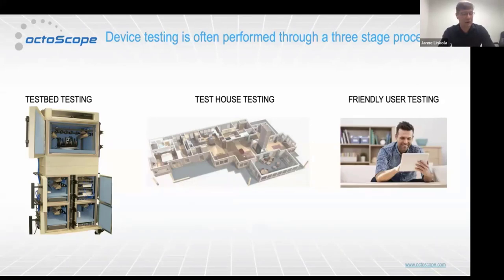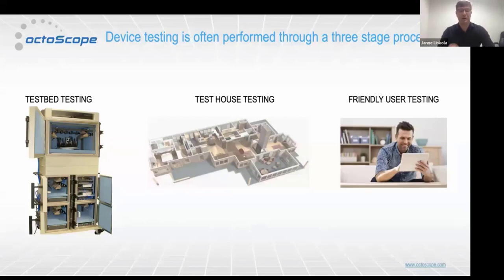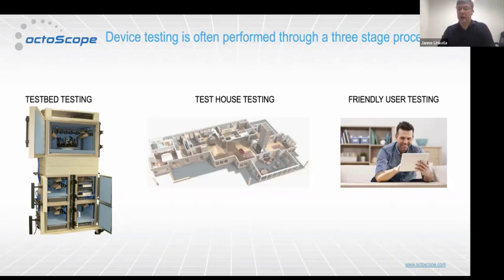When we start getting a product ready to be launched, we typically take it through a number of different types of tests to make sure it meets the demands of the market. This starts with some kind of lab testing, perhaps performed in a test bed like the ones Octoscope sells. The product is then taken into an open-air environment, perhaps a test house. And finally, testing involves real end users — some people call this beta tests or friendly user tests.